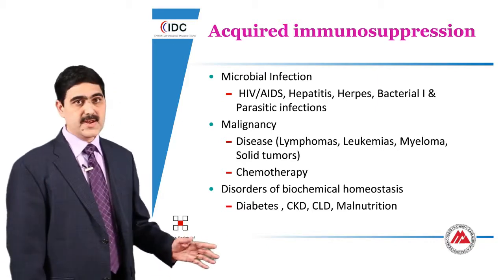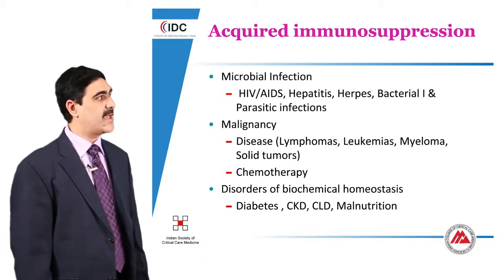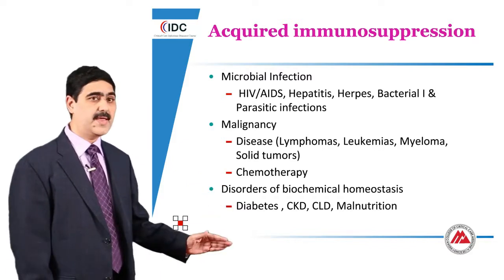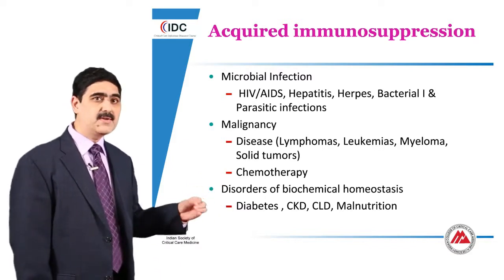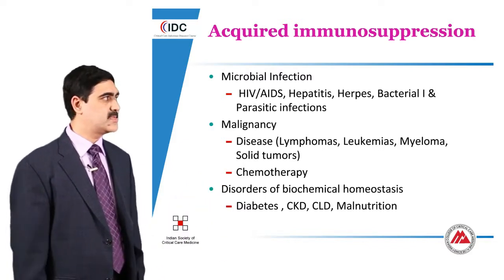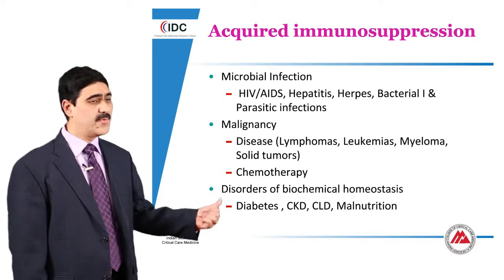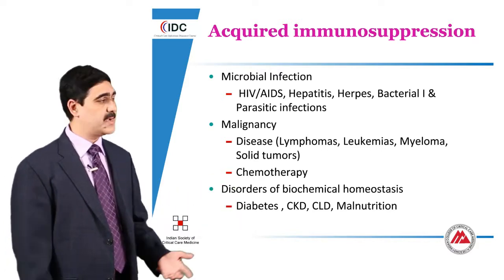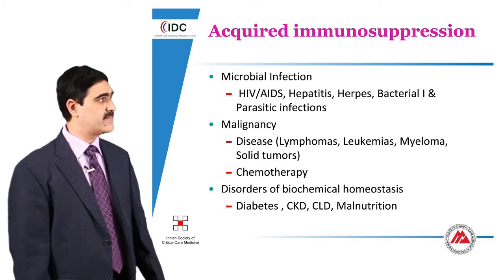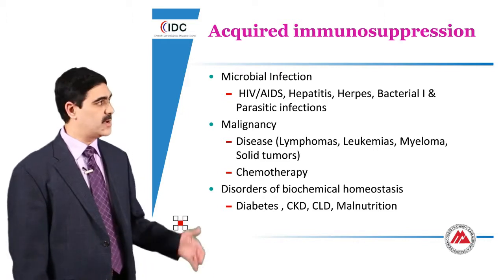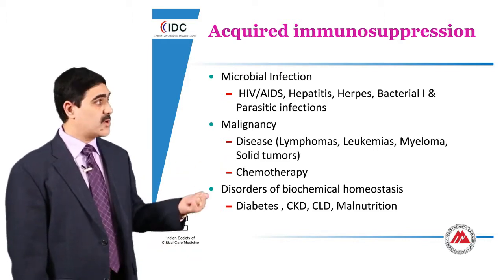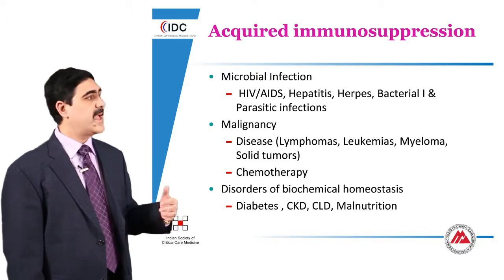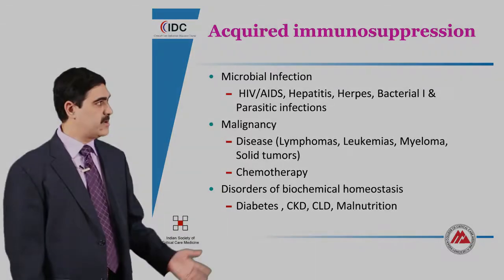The more important chronic diseases that we all deal with are disorders of biochemical homeostasis. Although it sounds fancy, I mean any disorders in metabolism or changes in our body, which could include diabetes — which is rampant in our country; we are one of the diabetic capitals of the world — chronic kidney disease, chronic liver disease, and any state of malnutrition.